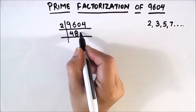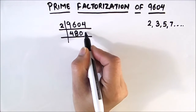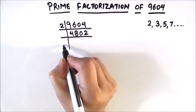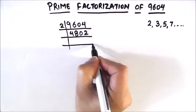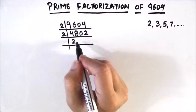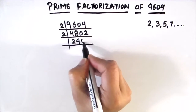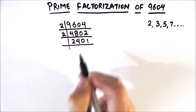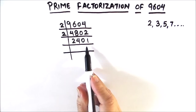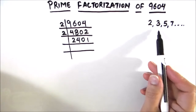Again the number is even, so we can divide it again by 2. 2 times 2 is 4, 2 times 4 is 8, 2 times 0 is 0, and 2 times 1 is 2. Now 2401 is an odd number, so we try dividing it by the next prime number, which is 3.